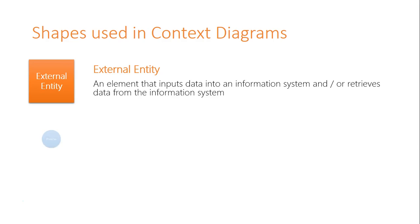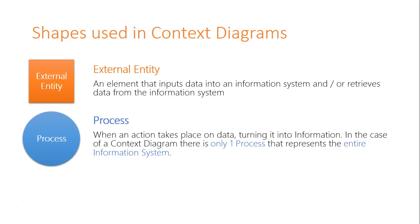The next thing we have is our process circle. Now a process is basically data goes into the actual process and then at the end of this process the information comes out. Within the context of a context diagram the process is the entire information system. So there's only ever one circle in a context diagram representing the entire information system.